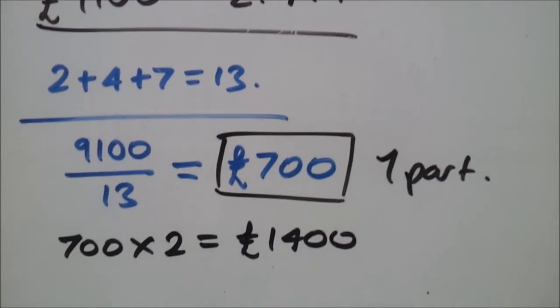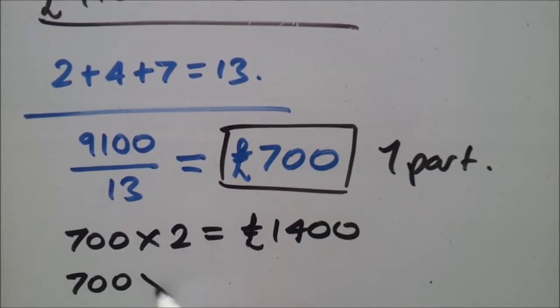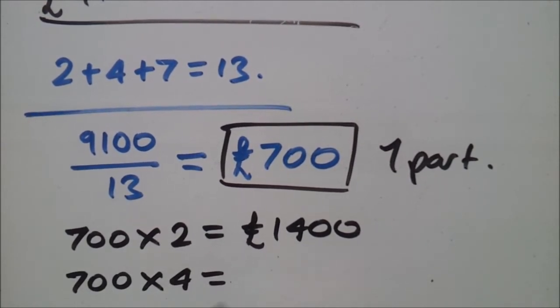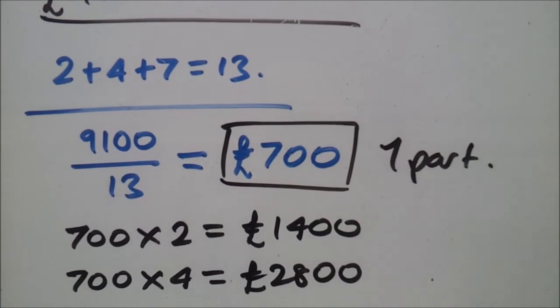Now to find four parts, we do the same thing. 700 times four will give you 2800 pounds.